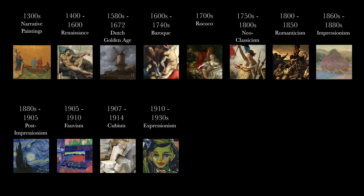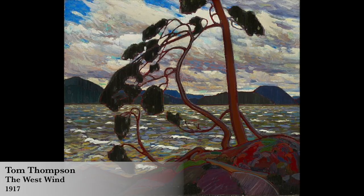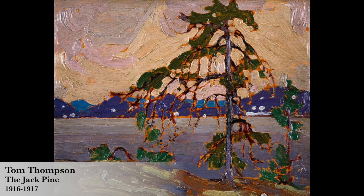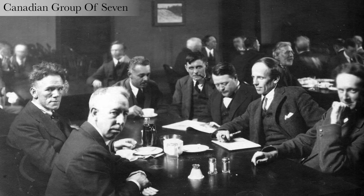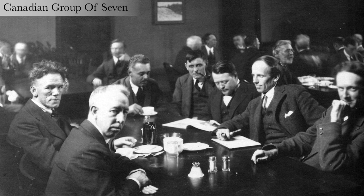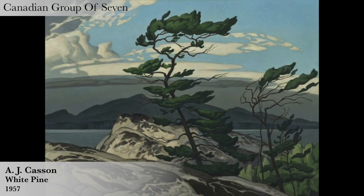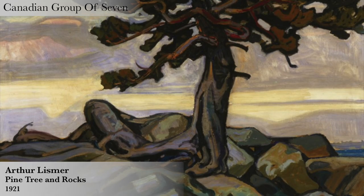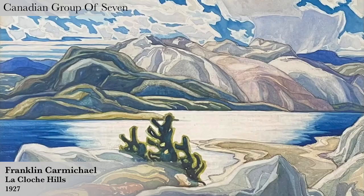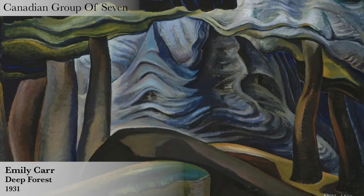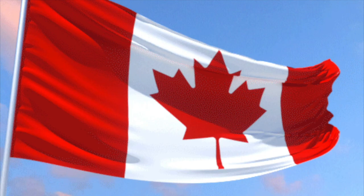Tom Thomson was a Canadian painter, and his death in 1917 left a legacy that would influence the Group of Seven — artists from 1920 to 1933 that included Franklin Carmichael, Lawren Harris, A.Y. Jackson, Frank Johnston, Arthur Lismer, J.E.H. MacDonald, Frederick Varley, and later A.J. Casson. Emily Carr was also associated with the group. They felt Canadian art could be developed through direct contact with nature and depicted the rugged Canadian landscape. They were the first major Canadian national art movement.